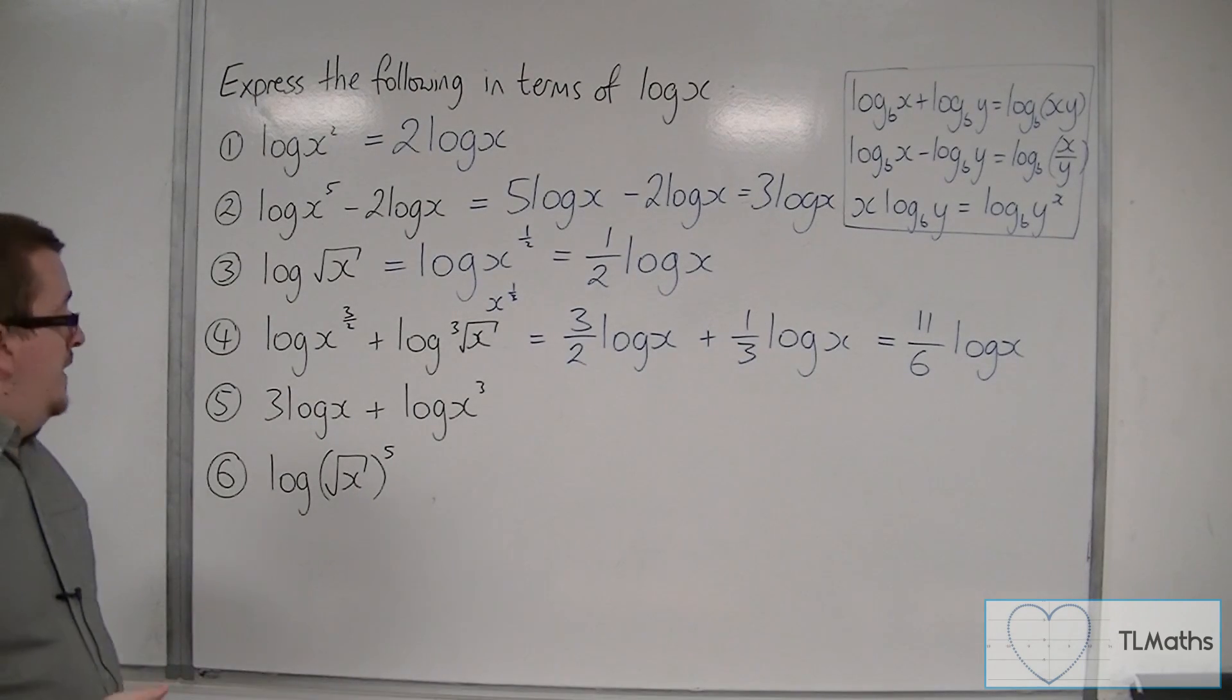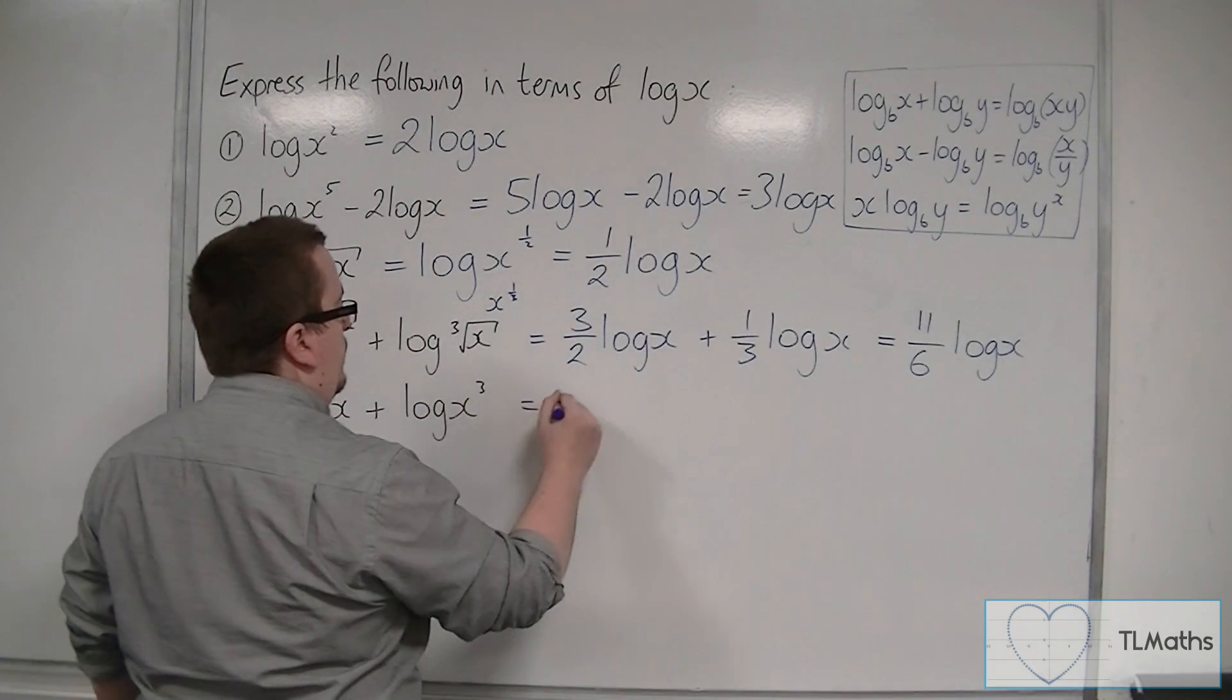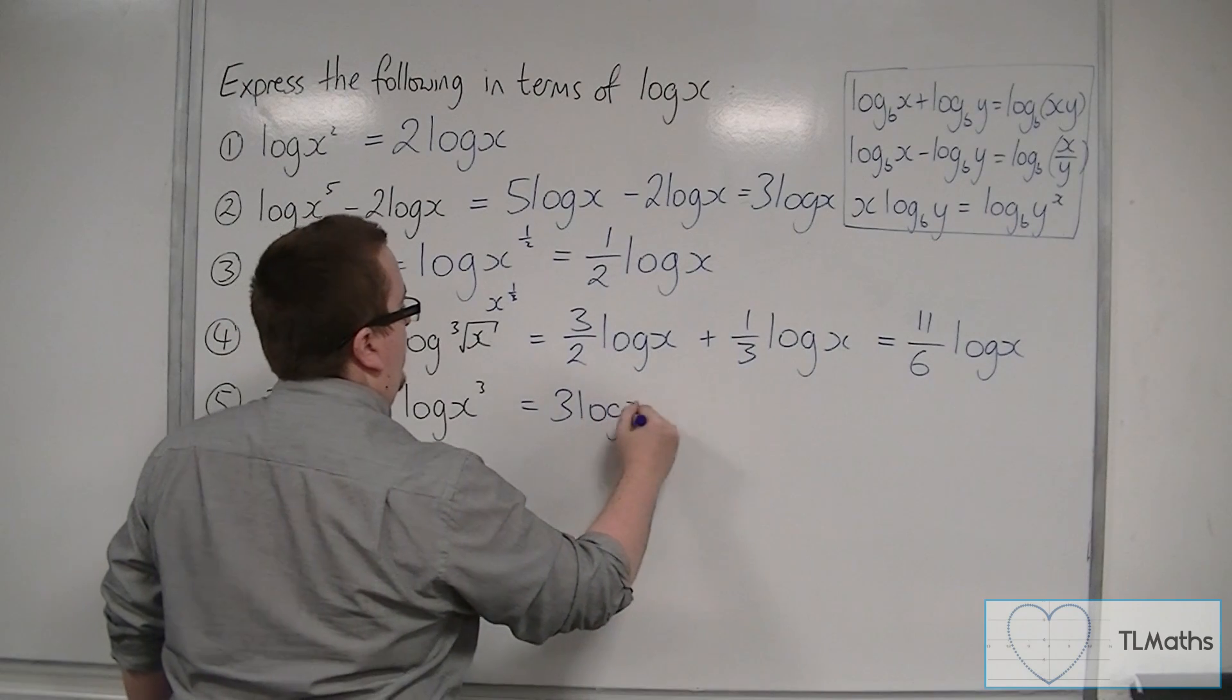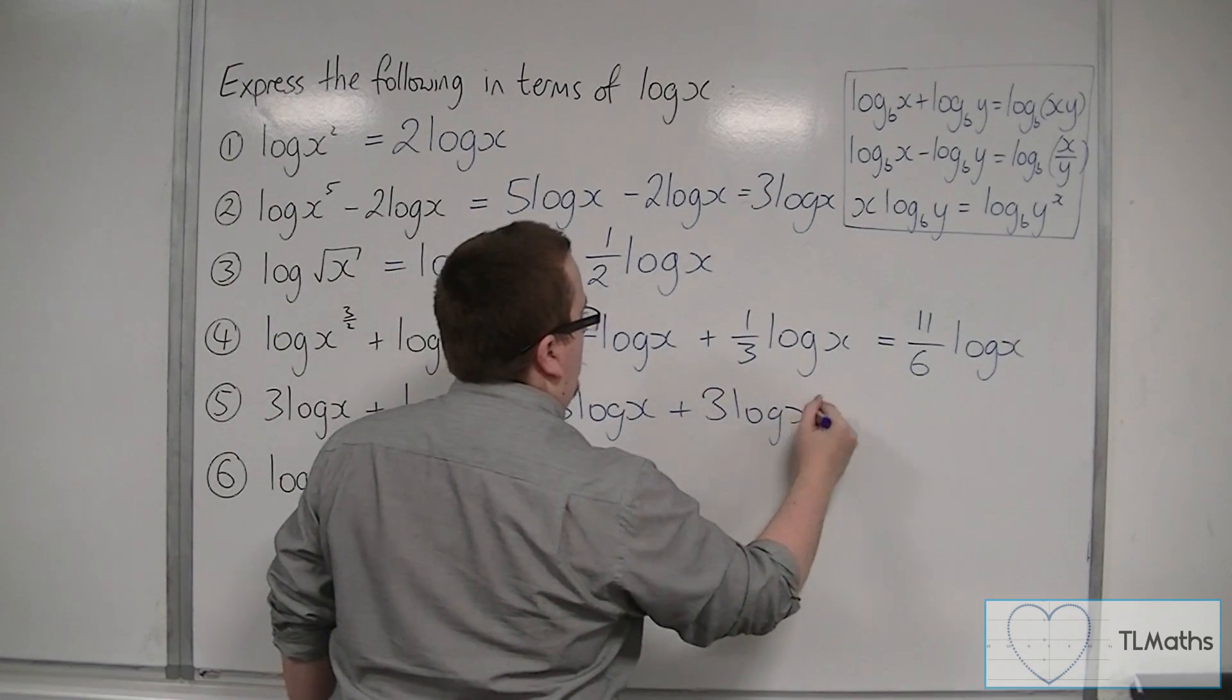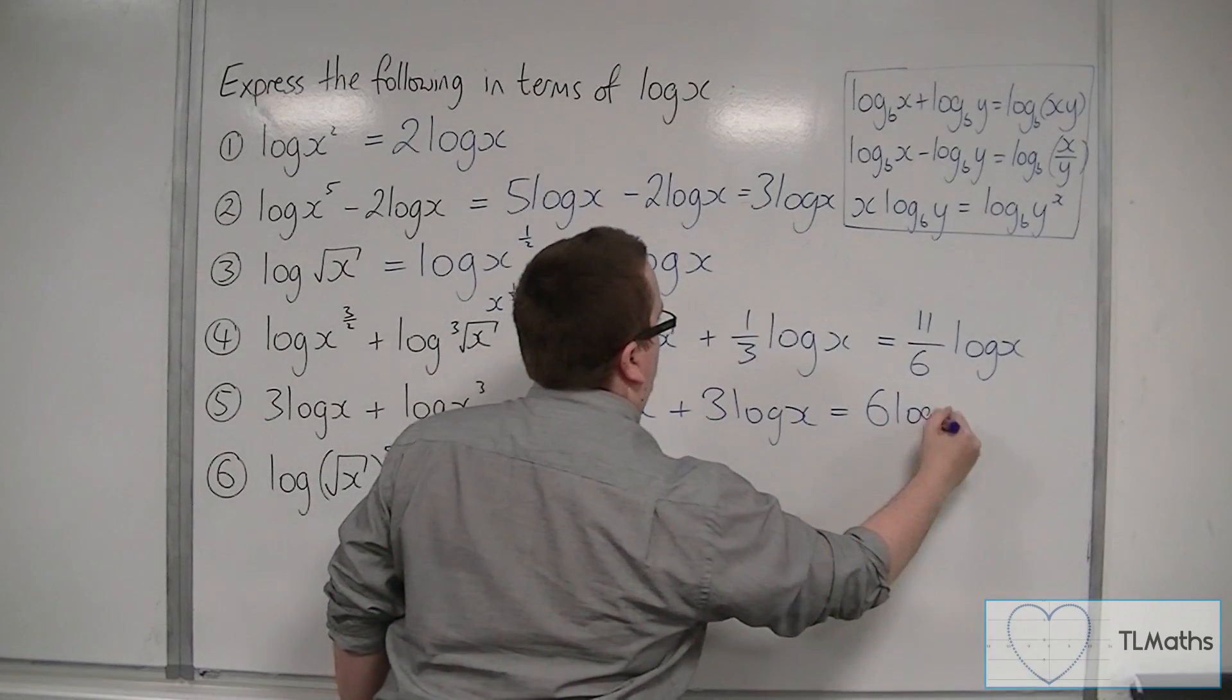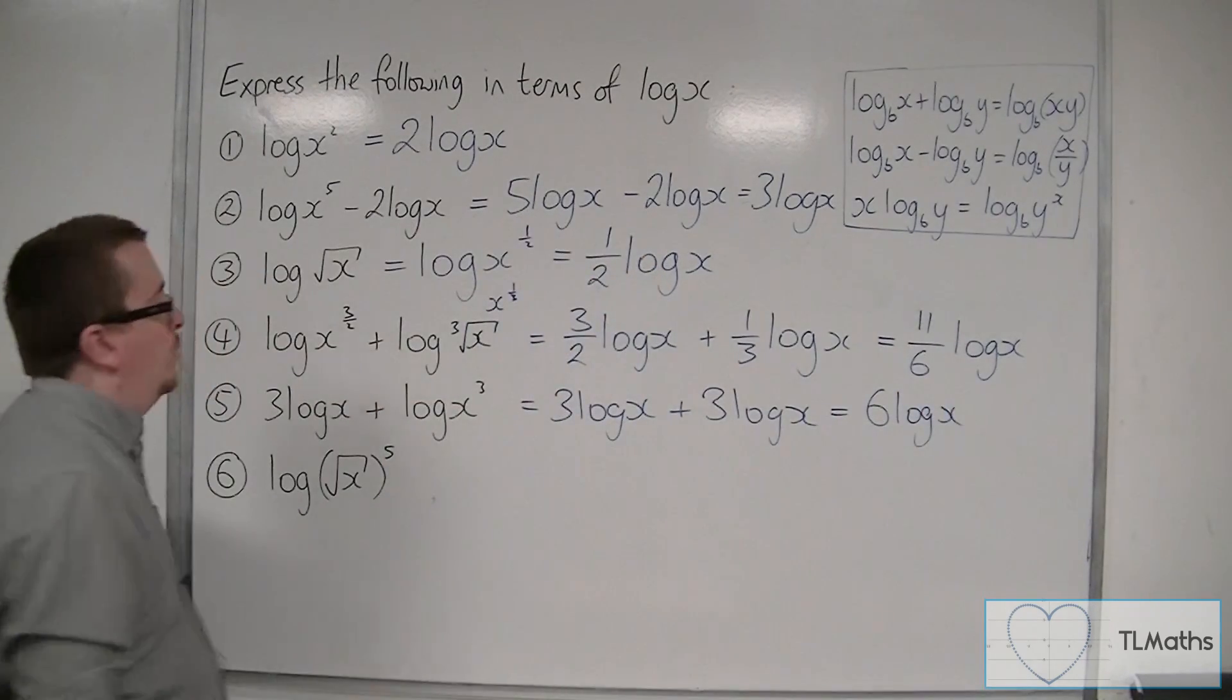Let's have a look at number five. The 3 log x is already in terms of log x, so I can leave that one alone. And the three here can come down to the front. So I've got 3 log x plus 3 log x, and that would make 6 log x. So that fifth one's quite straightforward.